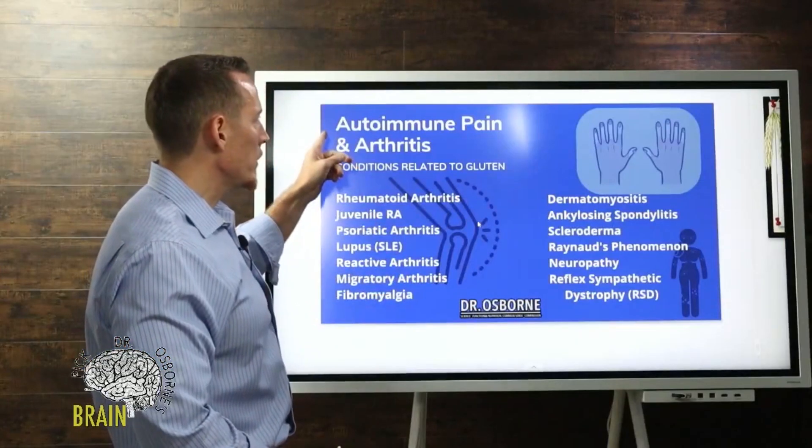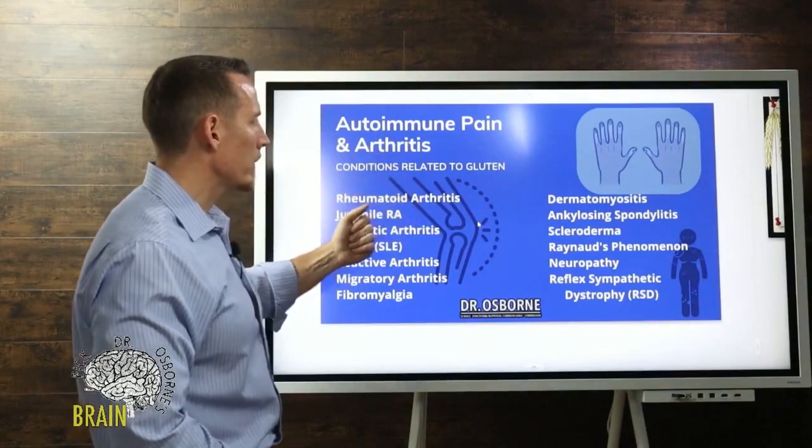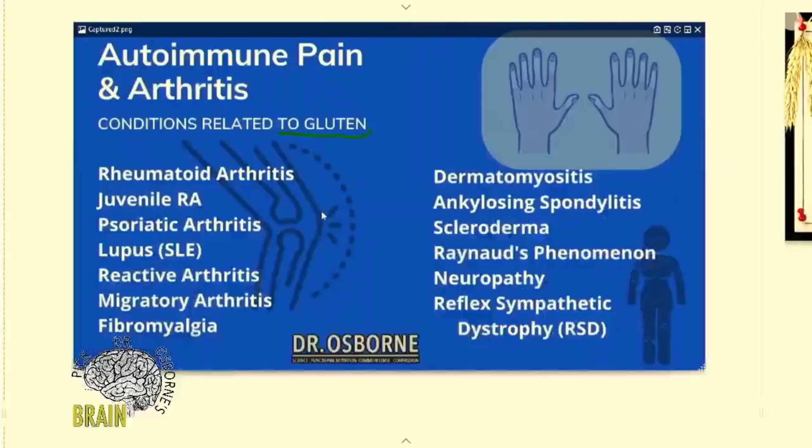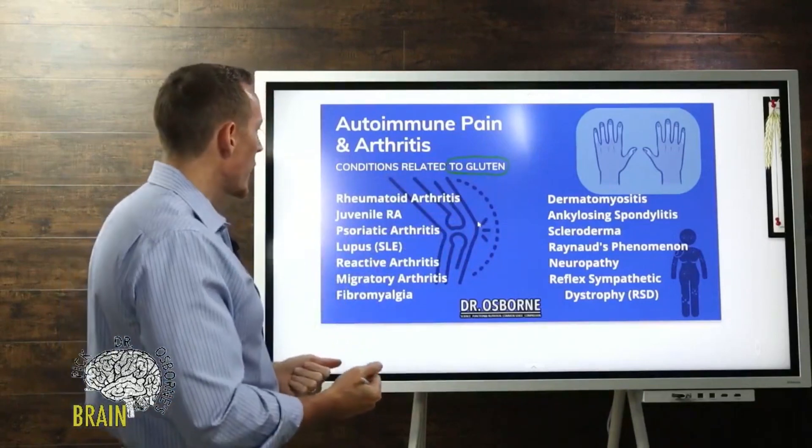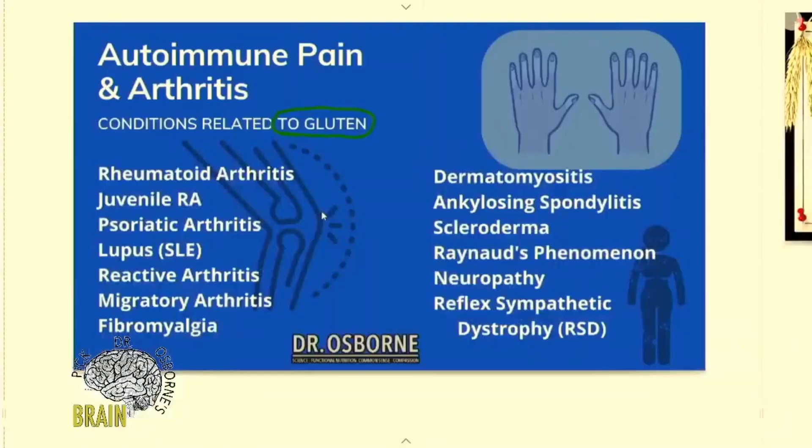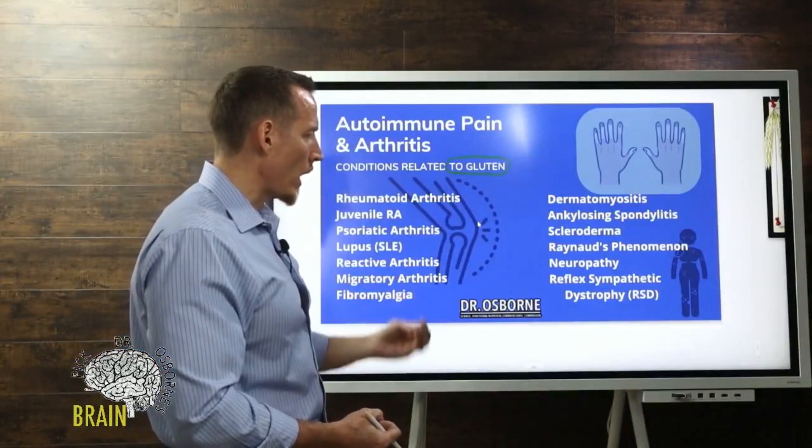Let's talk about autoimmune pain and arthritis. What are some conditions we know about as they relate to gluten? This list shows conditions related to gluten - we either know gluten can contribute to these diseases or directly cause them: rheumatoid arthritis, juvenile rheumatoid arthritis, psoriatic arthritis, lupus, reactive arthritis, migratory arthritis, fibromyalgia, dermatomyositis, ankylosing spondylitis, scleroderma, Raynaud's phenomenon, neuropathy, reflex sympathetic dystrophy or RSD. These are all examples of chronic pain conditions that are autoimmune in nature, causing either joint autoimmune disease or neurological autoimmune disease.